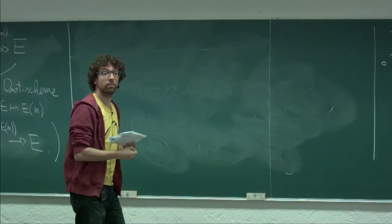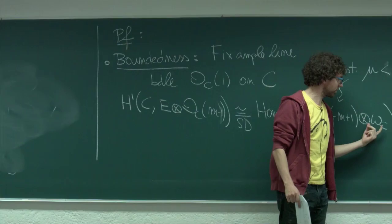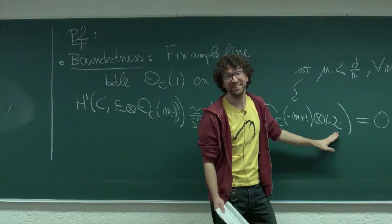This depends on the curve, but only on the genus of the curve, because the only numerical data I care about here is 2g minus 2.